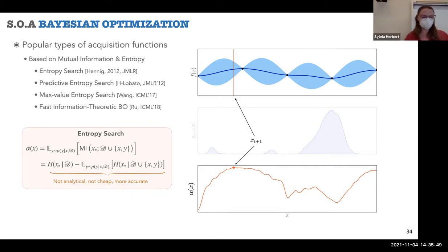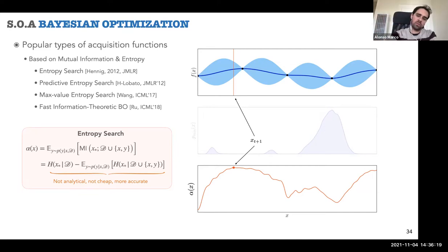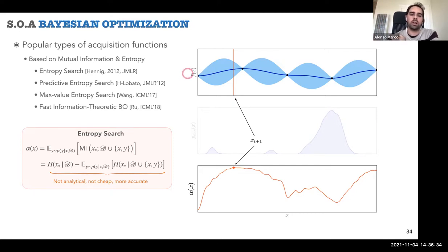A student asked about the trade-off between acquisition function choice and sampling time. Exactly right: it all depends on how expensive it is to evaluate your f(x). If a robot test takes five minutes, use an analytical acquisition function. If you're doing a drug trial taking months, you can afford using the most complicated entropy-based method — even if it takes minutes to compute the next iteration. If deciding what experiment to do takes more time than doing the experiment, that's a problem.